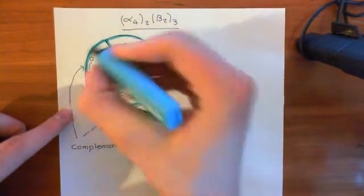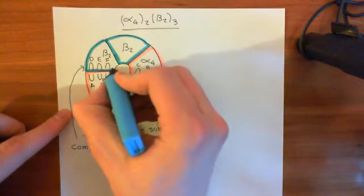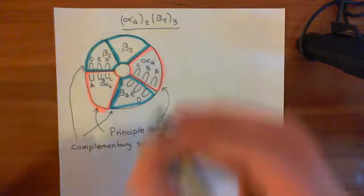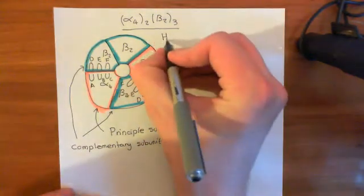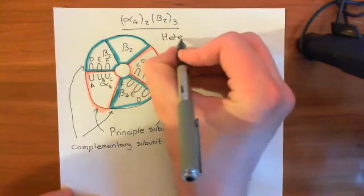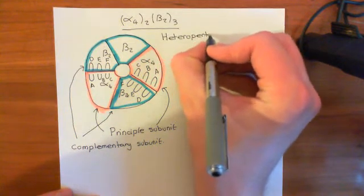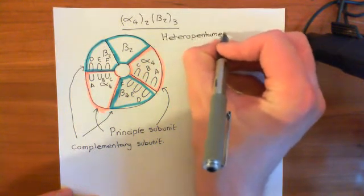Okay, so we have the beta-2 subunits in blue and the alpha-4 subunits in red. And this is a heteropentamer again, because you've used different subunits to make up the five-membered receptor.